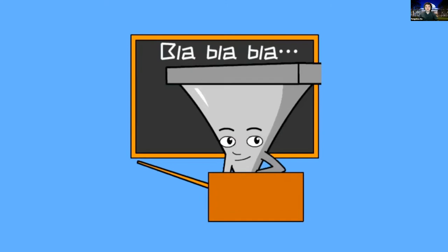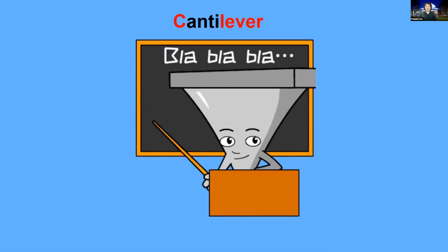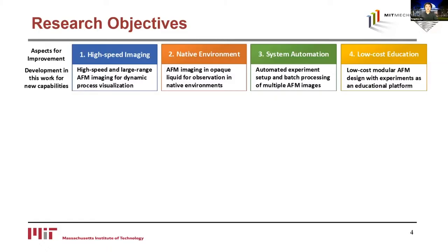As you may have guessed from the video, Mr. Clever is the cantilever probe, which is the key component of atomic force microscopes. In this work, we addressed four main challenges faced by nanotechnology researchers using AFM for imaging. First, we developed a high-speed and large-range imaging system for dynamic process visualization. Second, we enabled AFM imaging in chemically harsh opaque environments native to many samples. Third, we increased the level of system automation for AFM experiment preparation, imaging, and analysis to reduce operational overhead. Fourth, using our expertise in precision instrumentation, we developed a low-cost modular AFM system for education. These developments can be useful in a variety of applications, enabled by subsystem development.